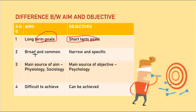Aims are broad and common. Aim is broad because it includes many things. Objectives, on the other hand, are narrow and specific — they have a limit, and that is why they are narrow.